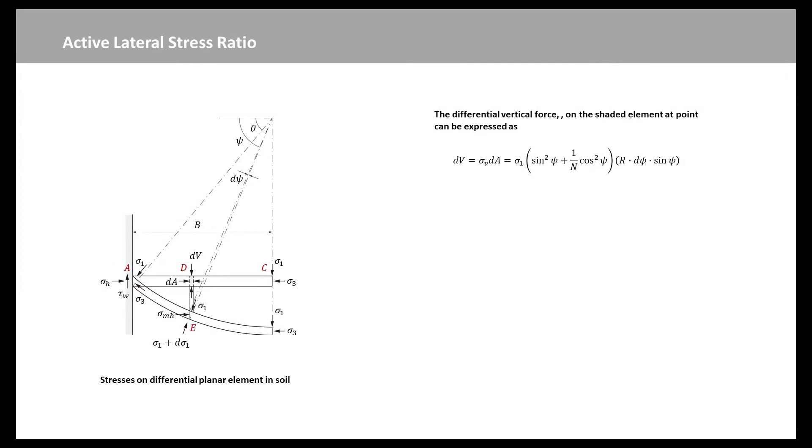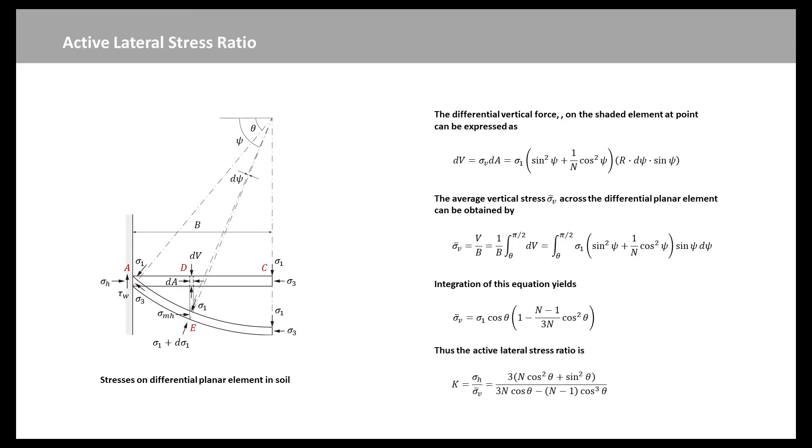We shall now derive a new relationship for k that reflects the variation of sigma-v with psi. The differential vertical force dv on the shaded element at point D can be expressed as this equation, where dA is the width of the shaded element at point D. The average vertical stress sigma-v bar across the differential planar element shown in this figure can be obtained by dividing the total vertical force v acting on the differential element by the width of the element b. Integration of this equation will obtain the new expression. Dividing equation sigma-mh by equation sigma-v bar gives a new ratio k of the active lateral stress at the cut to the average vertical stress over the differential planar element.